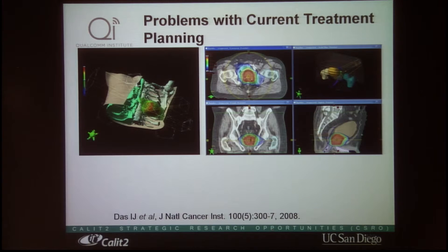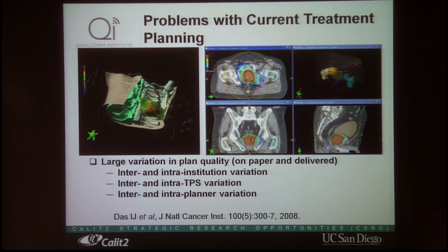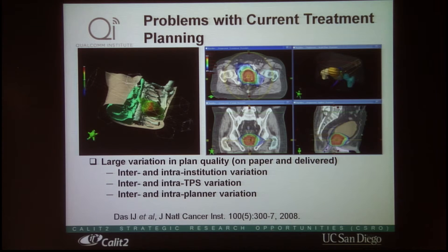Another problem is variation. Depending on the location — whether it's a clinic in a remote city — they may not have the most advanced equipment, and the physician or planner may not be very experienced. In those cases, patients may not receive the best treatment.